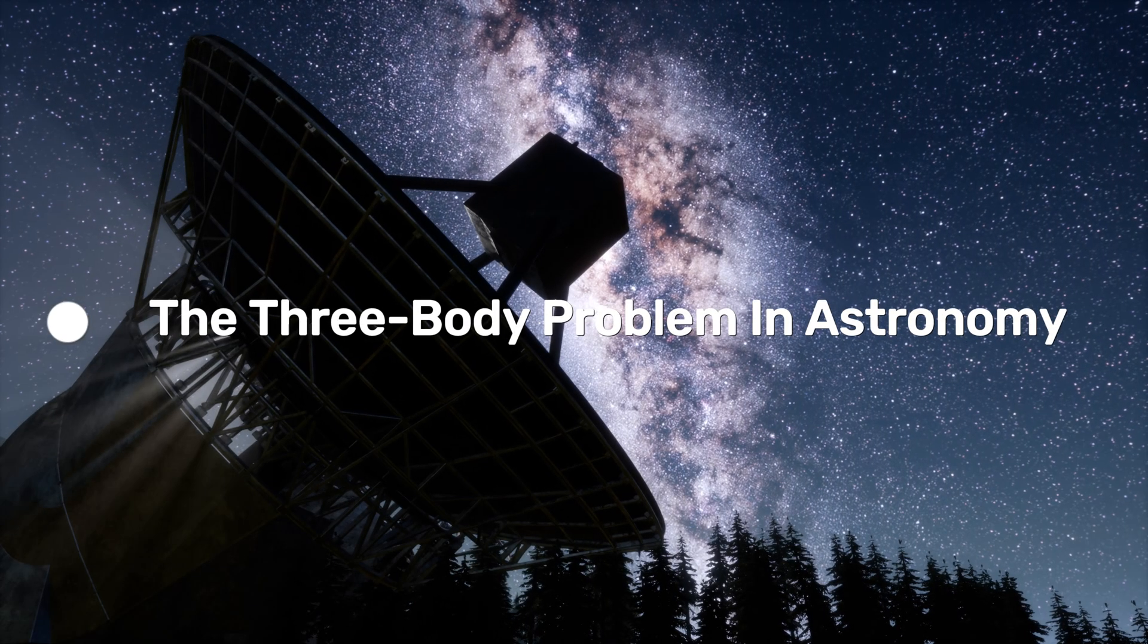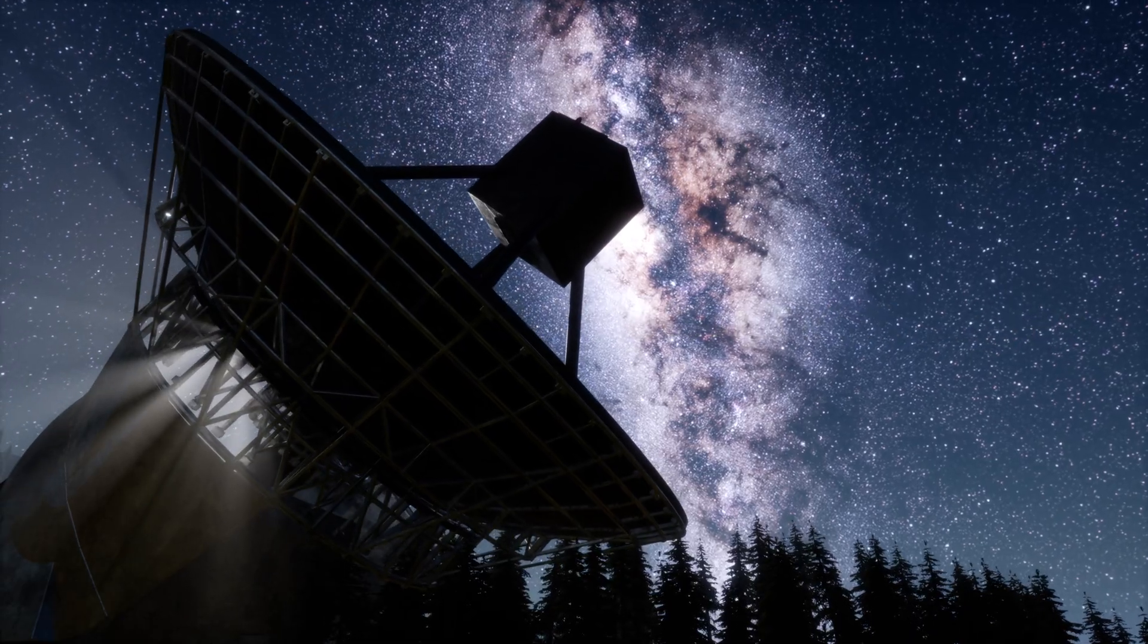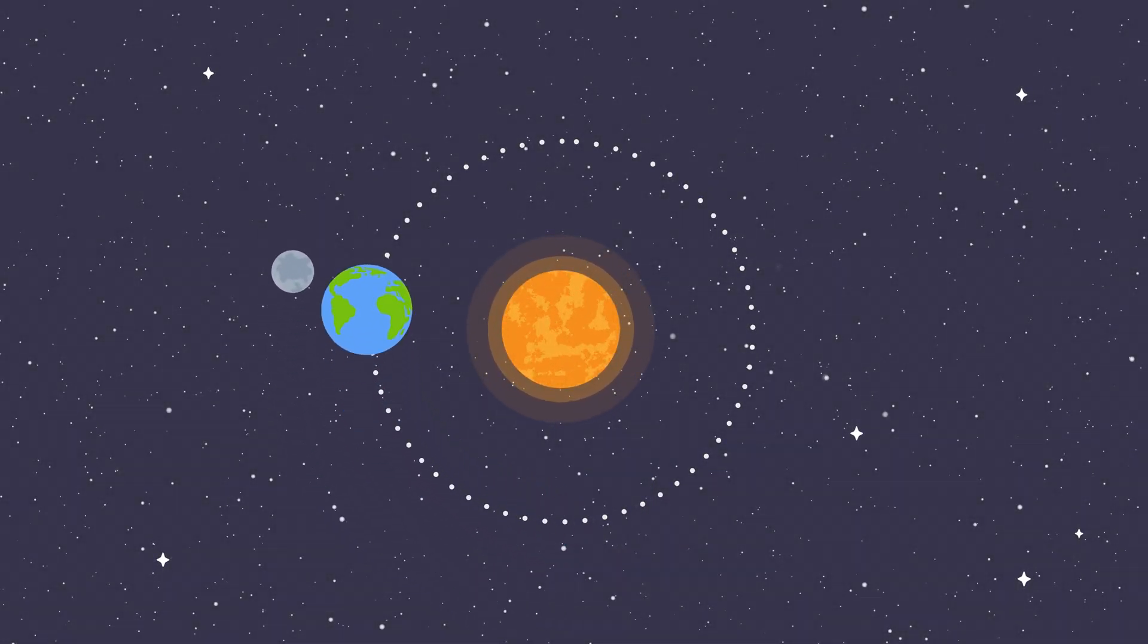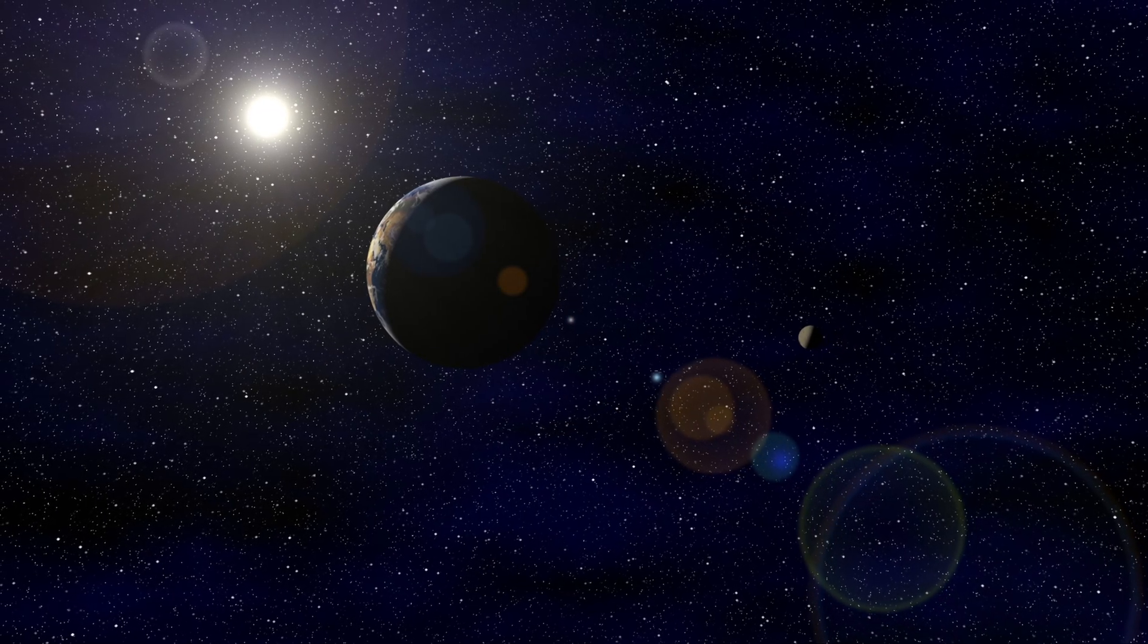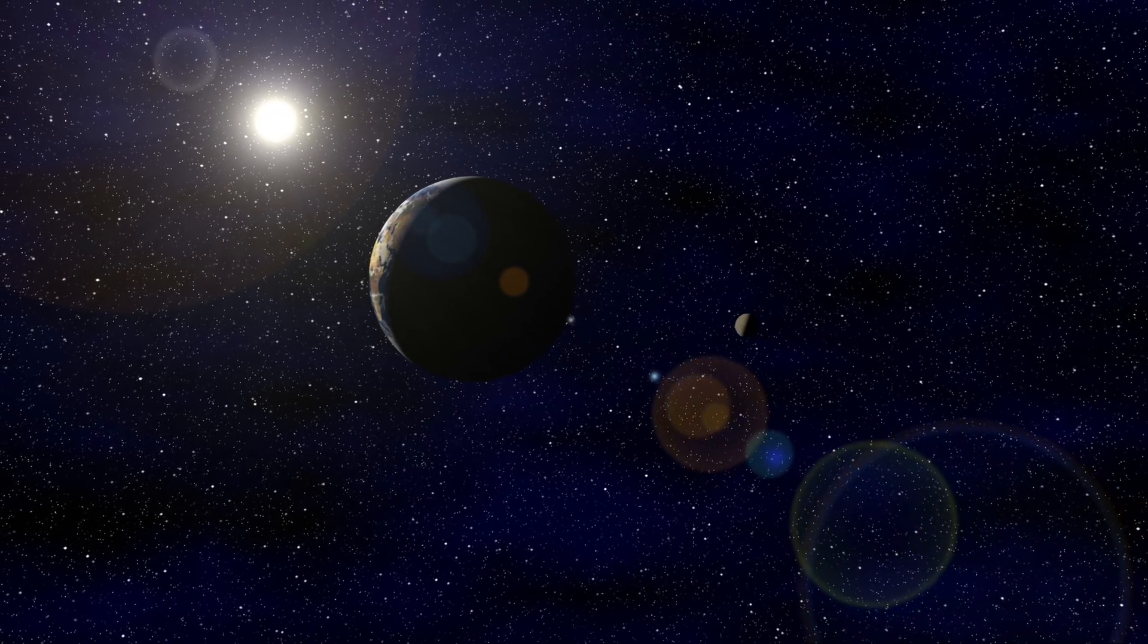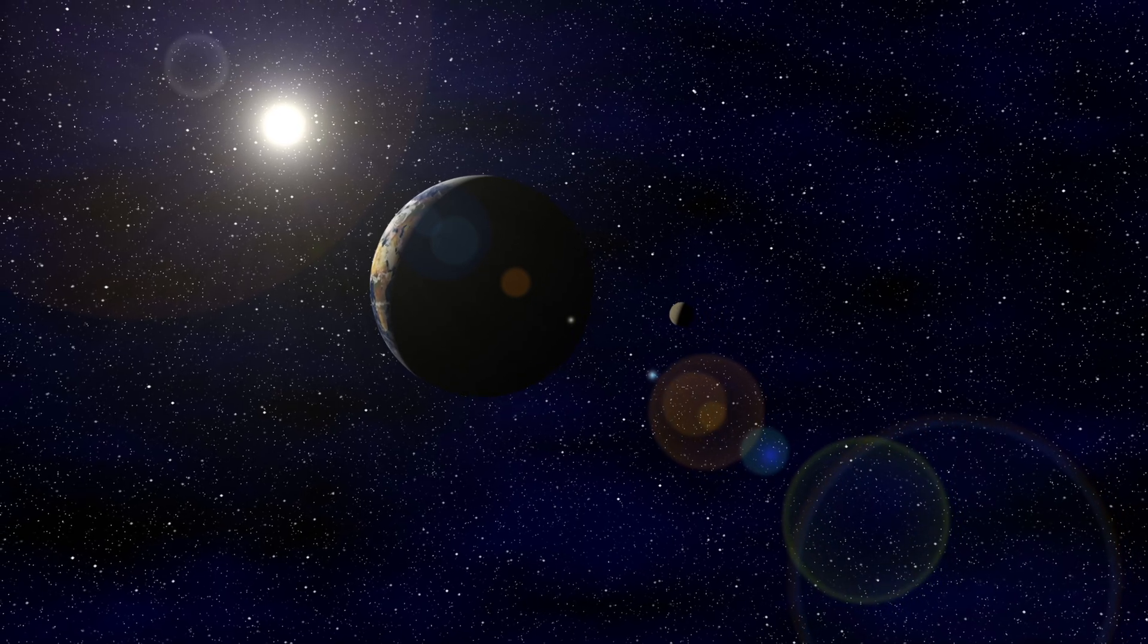For a long time, the three-body problem has been a curse for astrophysicists. Its solution is considered impossible because the motion of bodies quickly becomes chaotic. To understand this, let's imagine the Earth and the Moon orbiting the Sun. Since the Moon continues to orbit our planet and completes a full orbit every month, everything is fine.